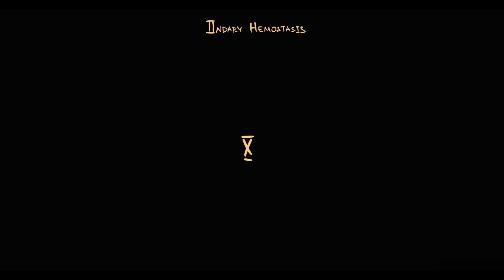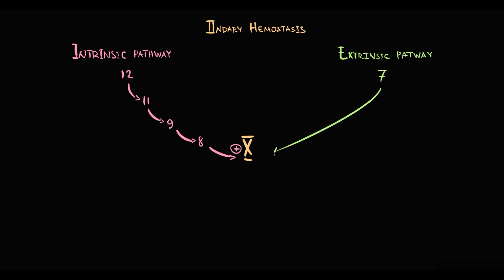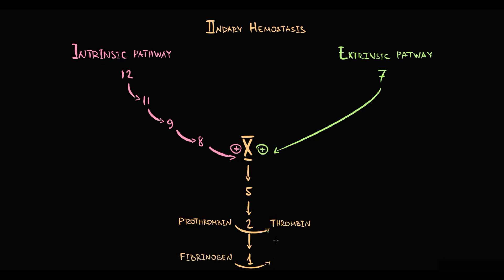The central factor of the coagulation cascade is factor 10. The goal of both the intrinsic and extrinsic coagulation pathways is to activate factor 10. The intrinsic pathway consists of factors 12 to 8; the extrinsic pathway consists of just factor 7. Activation of factor 10 results in activation of factors 5, 2, and 1. Factor 2 is called prothrombin, which with activation becomes thrombin. Factor 1 is called fibrinogen, which with activation becomes fibrin — and exactly fibrin makes the weak platelet plug into a formidable thrombus.